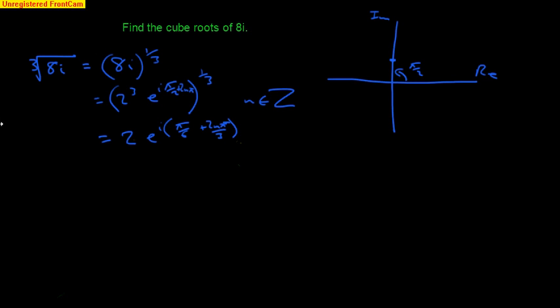Okay, let's just try a different colour. If n equals 0, then we get the cube roots of 8i are equal to 2 e to the i. Well, if n equals 0, all this on this end is going to be nothing. So we just get e to the i pi by 6.